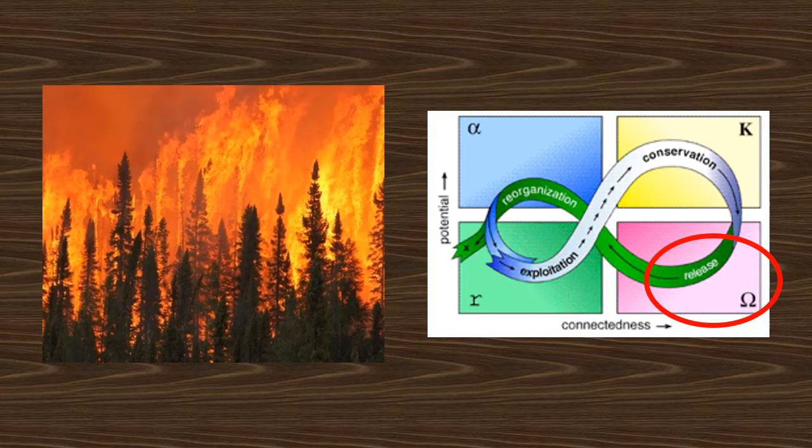Eventually, a disturbance will cause the system to collapse. This is the release phase. A fire, pest, or industrial development may destroy the ecosystem and all resources are released. This is also known as the Omega phase.